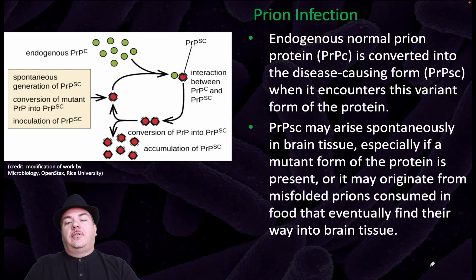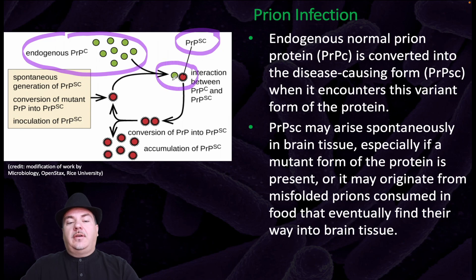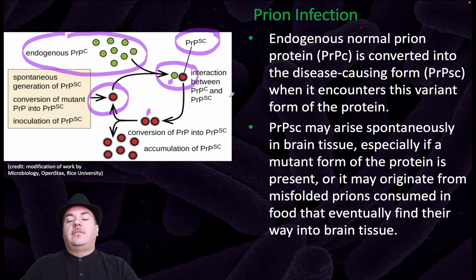Here's an example of what can happen during a prion infection. Let's say we start with an endogenous normal protein and it encounters a disease-causing form of this protein — the prion form. When they interact, the endogenous protein is converted into the disease-causing protein. These disease-causing proteins may arise spontaneously in brain tissue, especially if a mutant form of the protein is present, or they may originate from misfolded proteins consumed in food that eventually find their way into brain tissue.